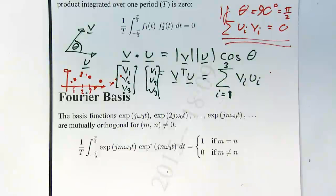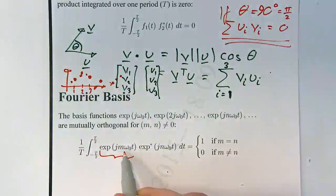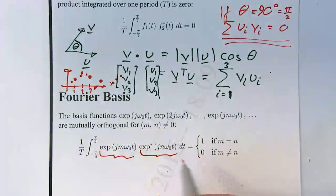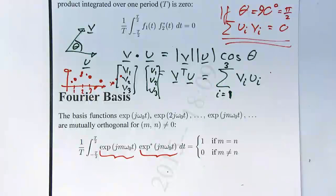It's a natural extension that complex phasors are orthogonal to each other as well. So over one period, if I took a phasor e^(jmω₀t) and multiplied it by a different phasor e^(jnω₀t) — assuming the frequencies of these phasors are different, so m is not equal to n — then they are orthogonal.